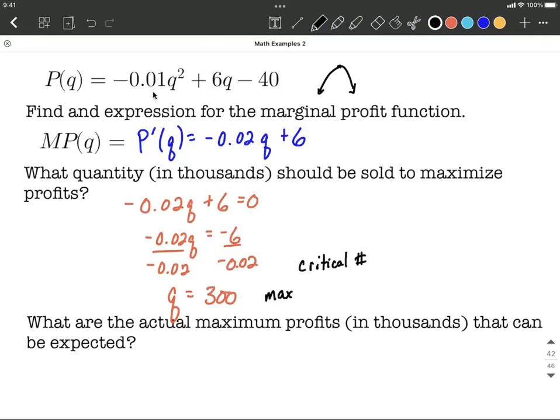So to do this, we're going to take the critical number where the maximum is going to occur. And we're going to go back to the original function, plug it back into our profit function.